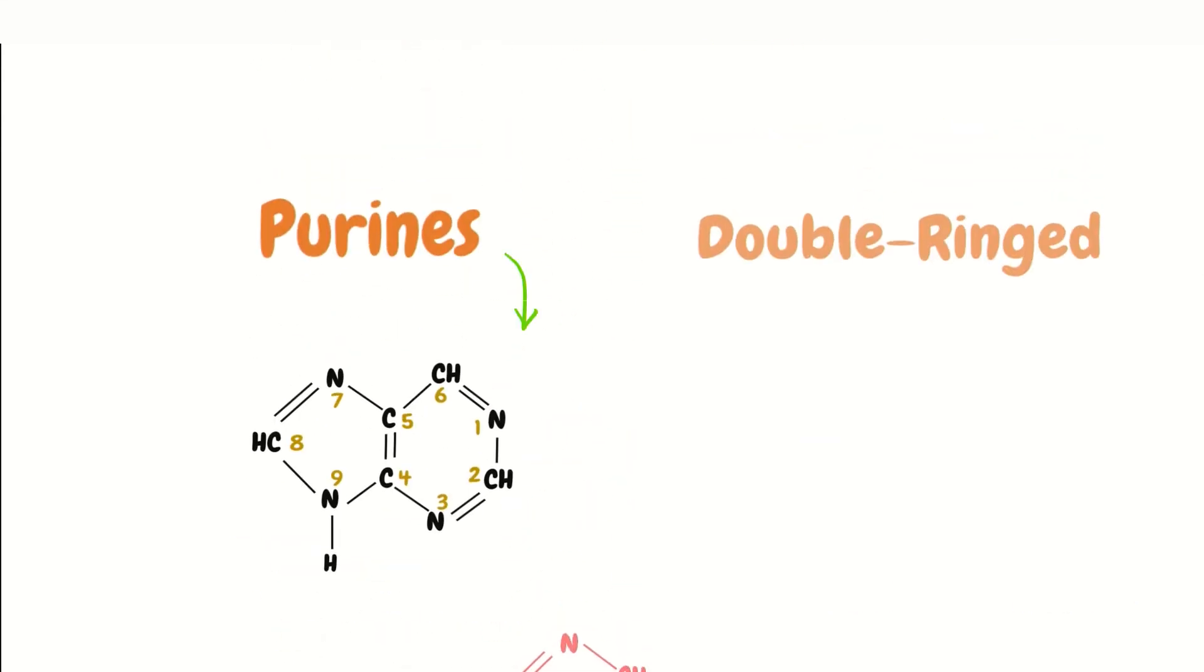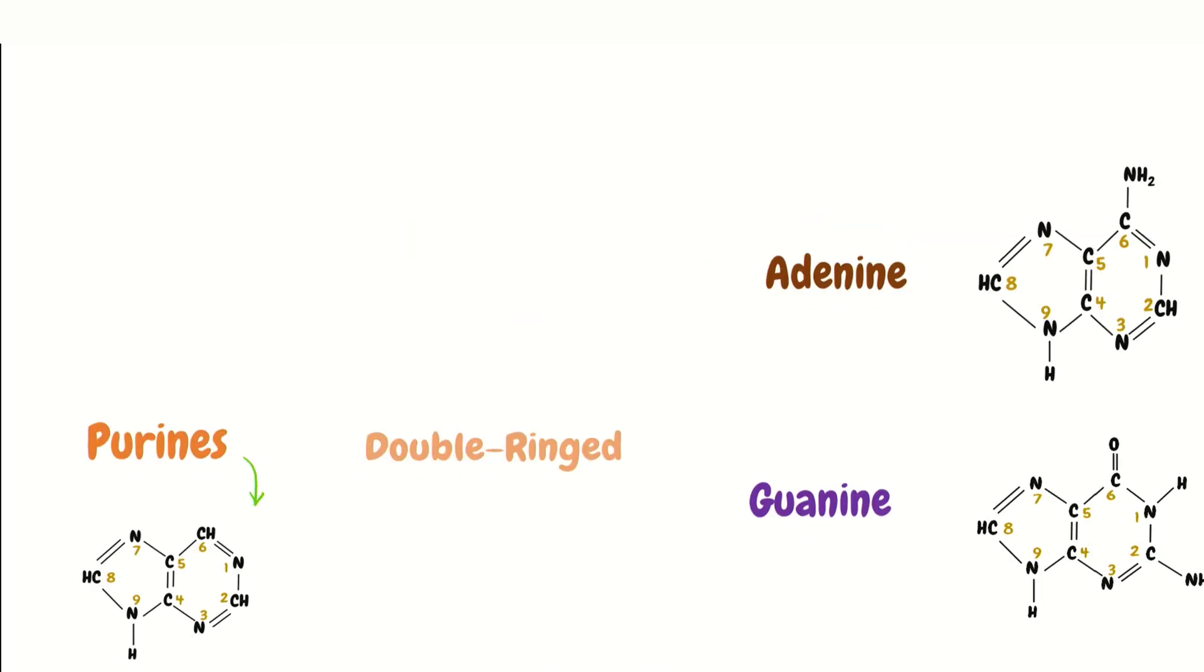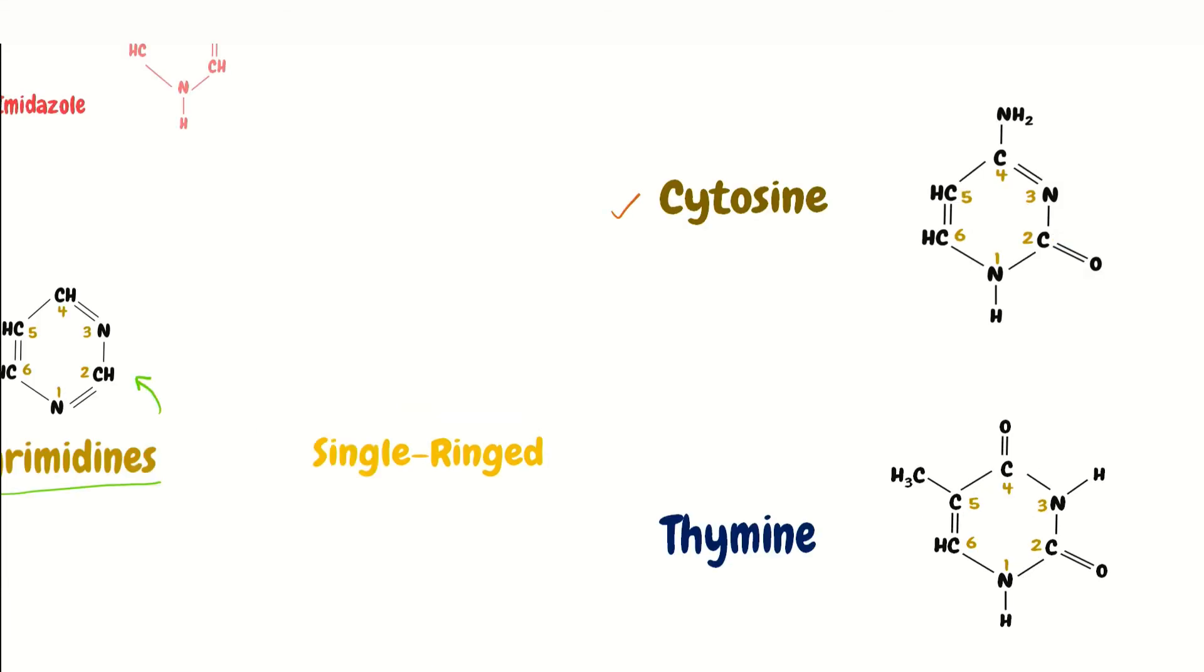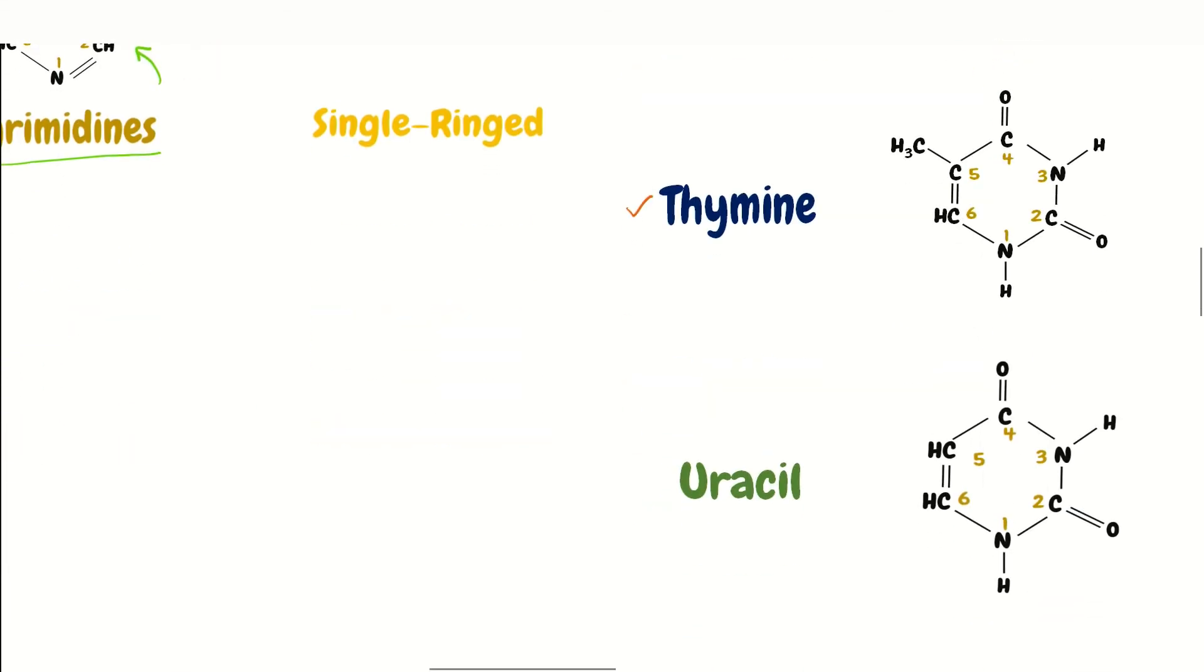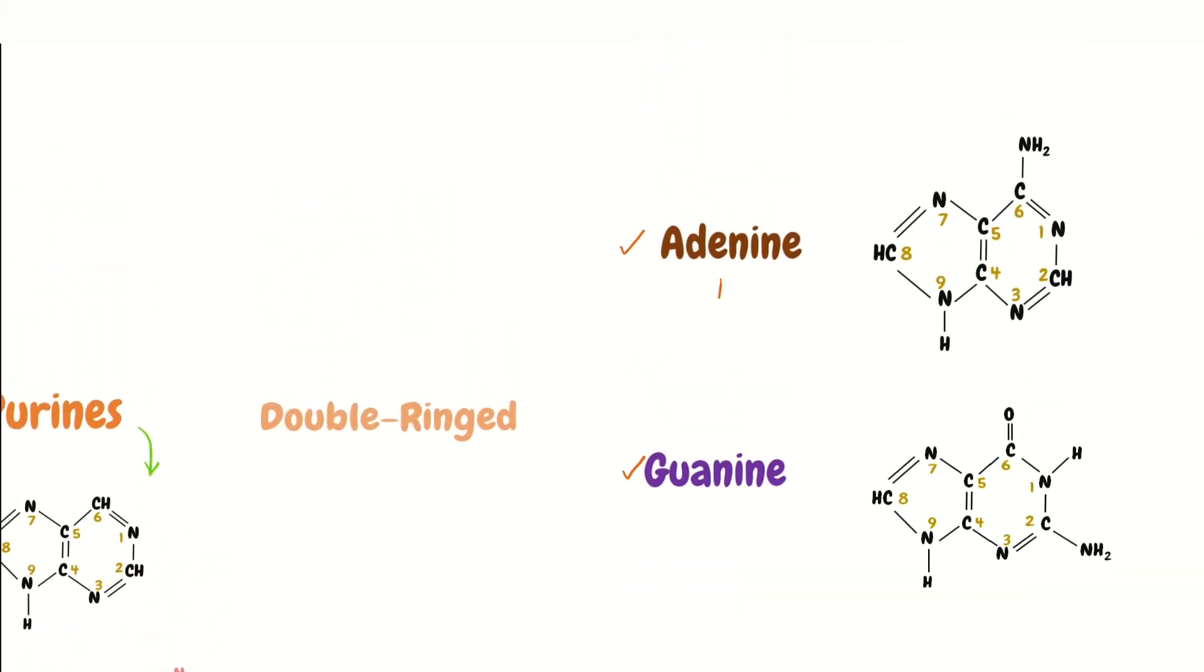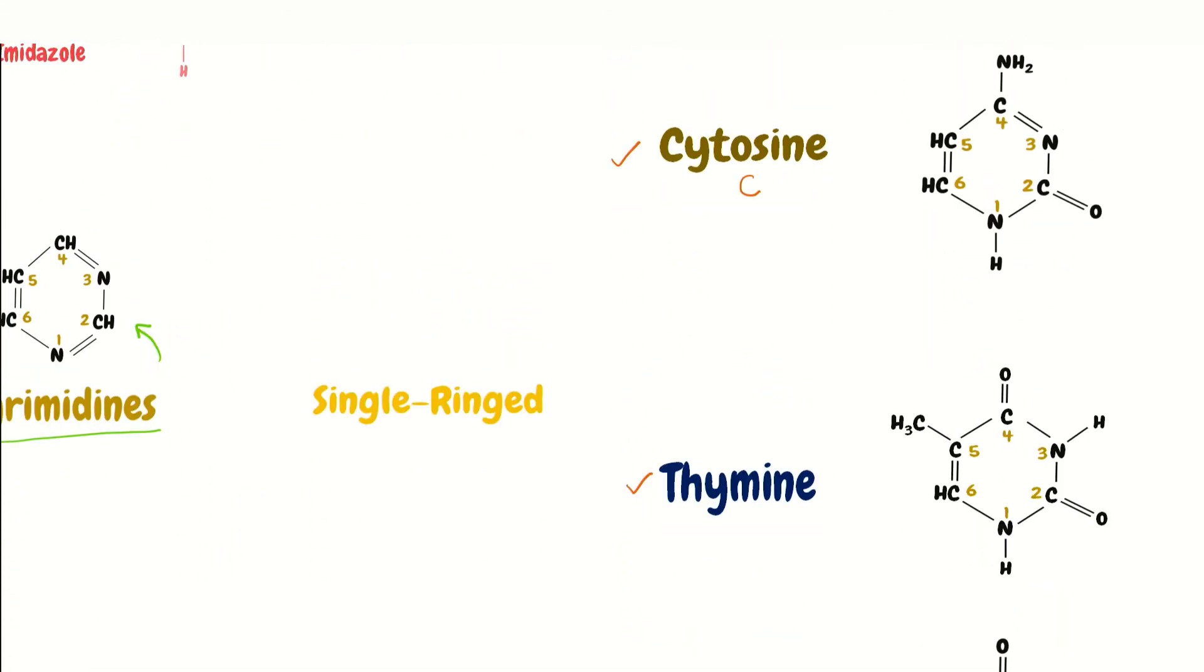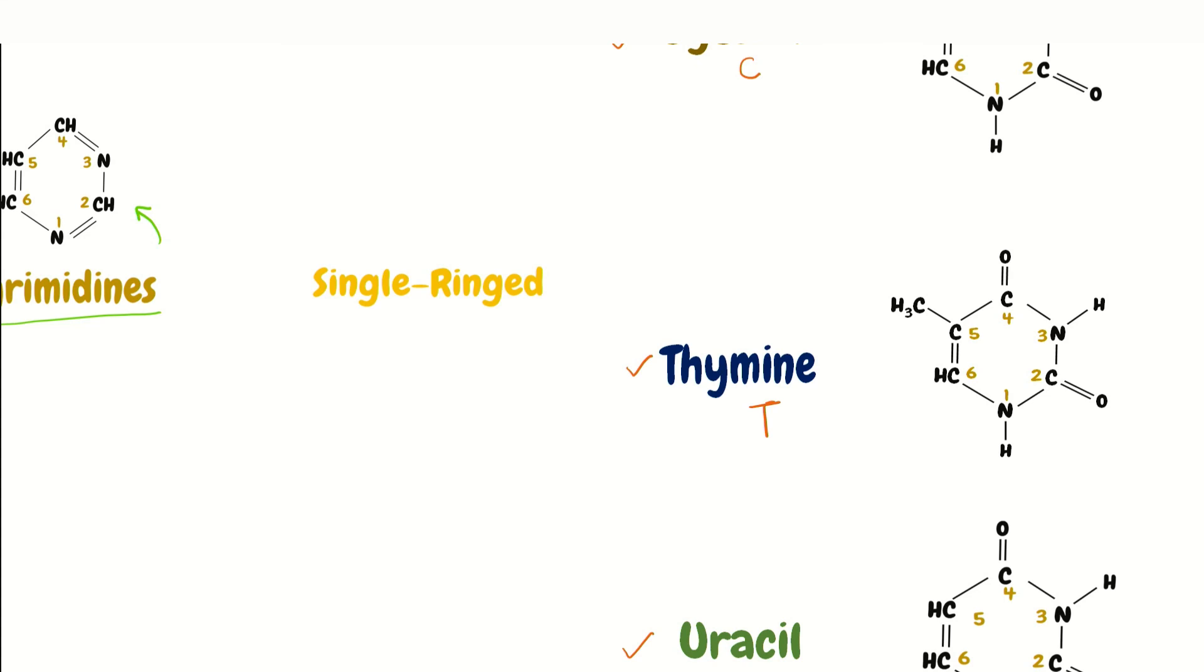Now there are five common nitrogenous bases: adenine, guanine, cytosine, thymine, and uracil. These are often denoted with their initials, like adenine with A, guanine with G, cytosine with C, thymine with T, and uracil with U.